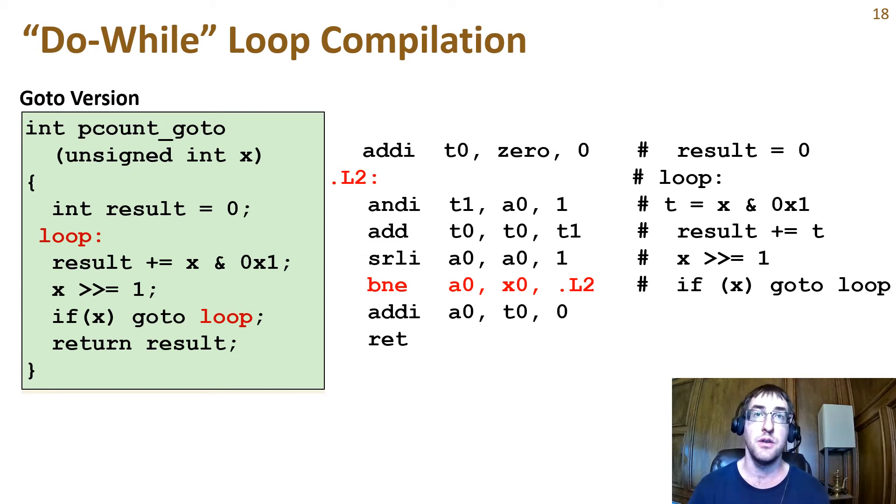It starts by clearing T0 to hold the result. The start of the loop body is labeled L2. The loop body contains three assembly statements: and the input argument with one, then add the result to the T0 intermediate result. Then the input register A0 is shifted right by one. The loop body ends with the conditional branch instruction back to L2 if the A0 register holding x is not zero. After the loop ends, the intermediate result is moved from T0 to A0 using an ADDI instruction with zero valued immediate followed by the return.